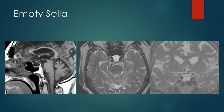We commonly see what we call an empty sella — it's where the sella is expanded and full of CSF. You can either see pituitary tissue flattened along the bottom, or sometimes it's so thin you don't see it at all. The pituitary stalk is still present, but on T2-weighted images it is full of hyperintense T2 signal corresponding to CSF, with the pituitary infundibulum running through the middle. On the coronal, you can see the optic chiasm, the pituitary infundibulum, and that thin band of pituitary tissue along the bottom of the sella.